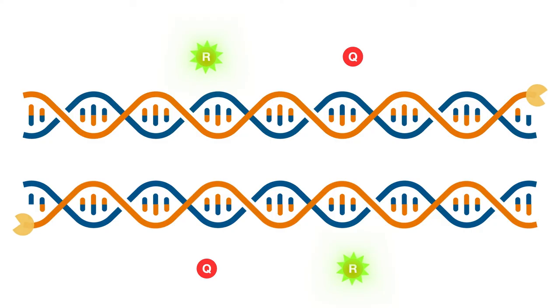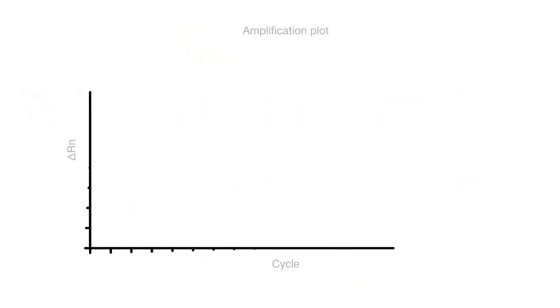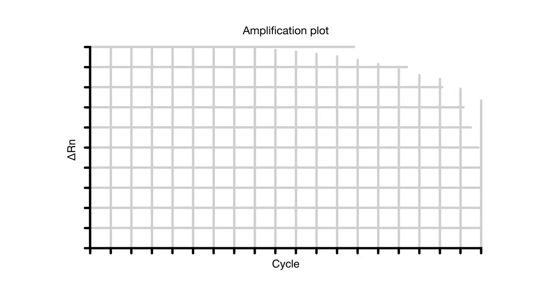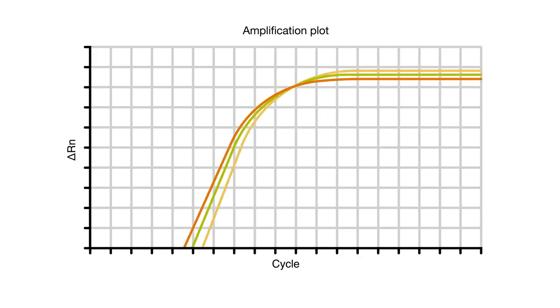This leads to a permanent increase in fluorescence that, not coincidentally, perfectly accords with our doubling of product. And of course, our real-time instrument can monitor and record this increase in fluorescence after each cycle, generating an amplification plot that's more than a little useful for interpreting our data.